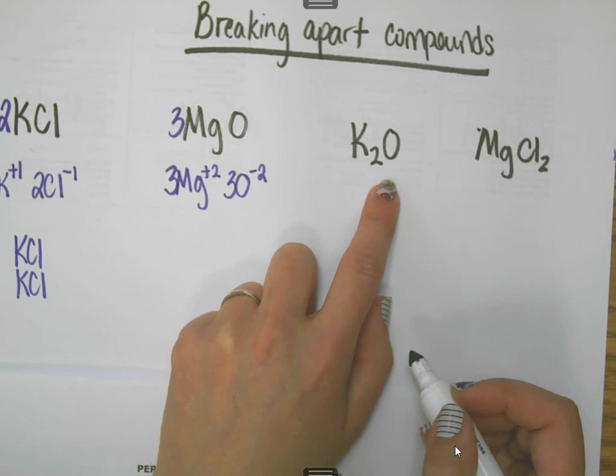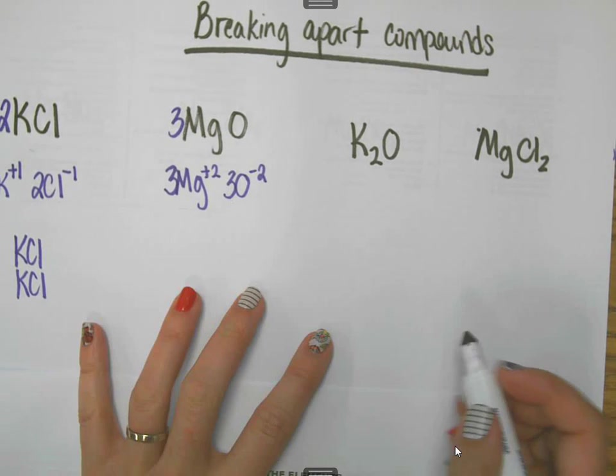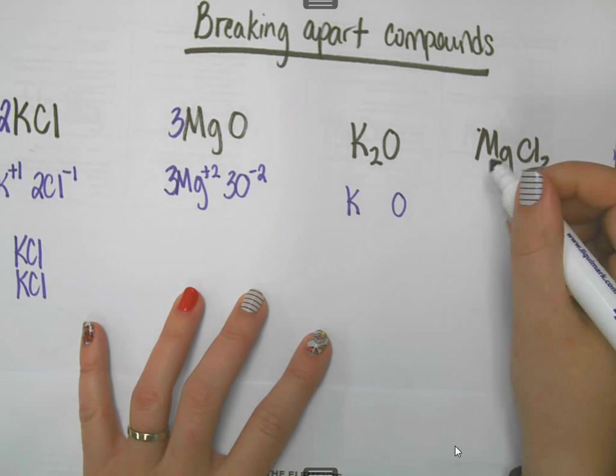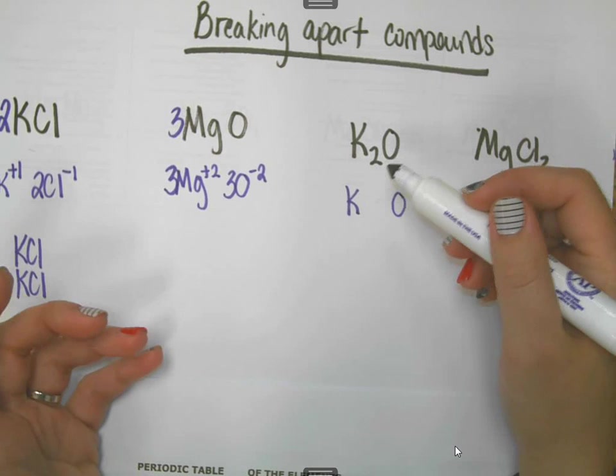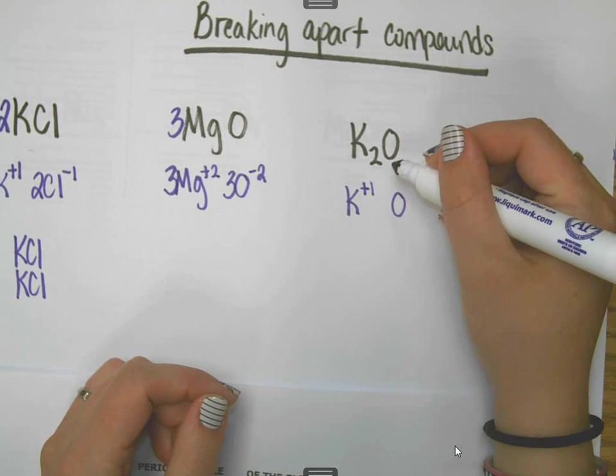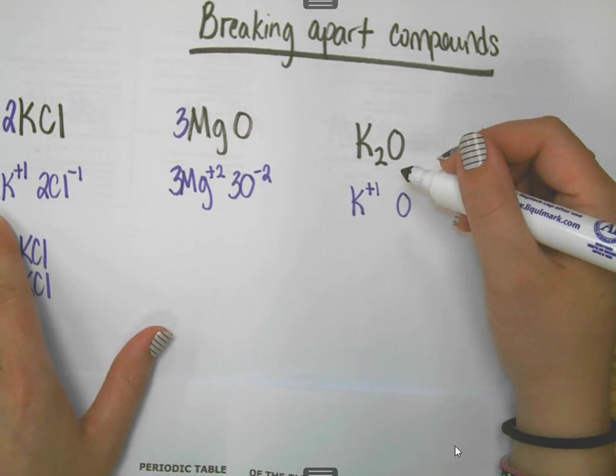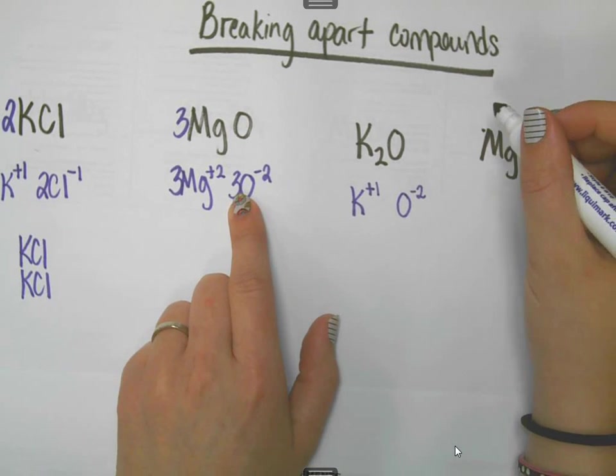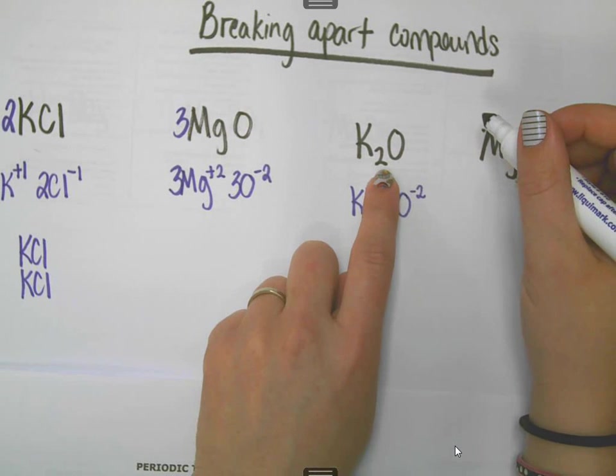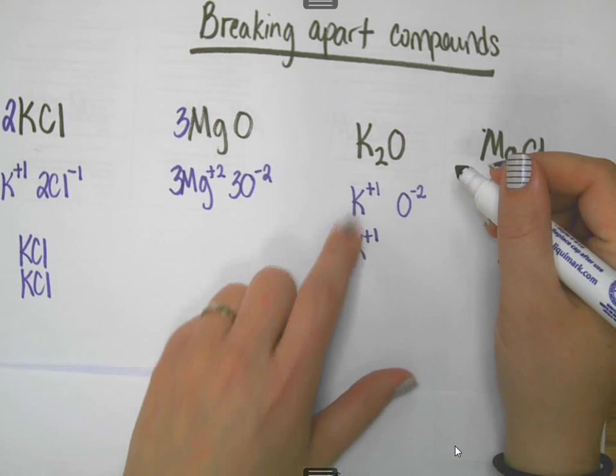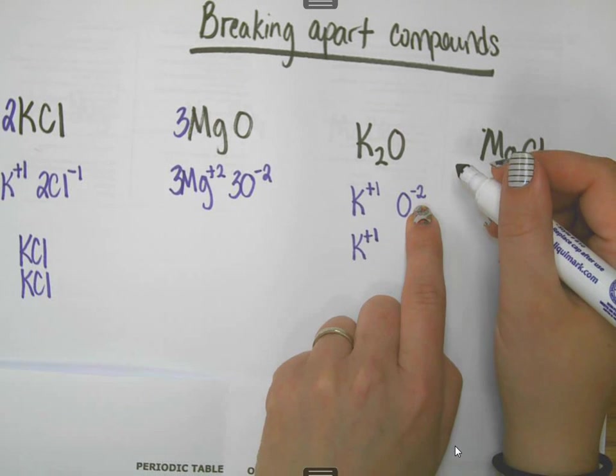K2O. Same thing we've been doing, but this one has a subscript. This breaks up into potassium and oxygen. I need to figure out the charges next. Potassium is a plus 1. We did it to begin with. It was our first one over here in potassium chloride. Oxygen we just figured out is a negative 2, but this one has a subscript in it.